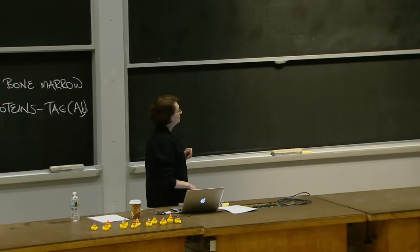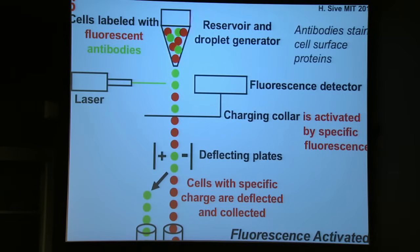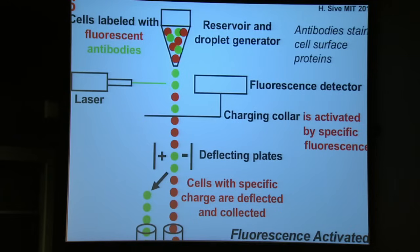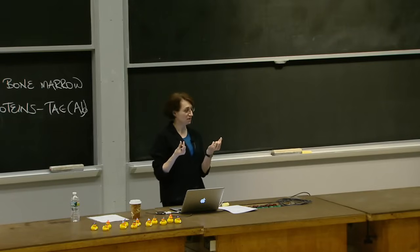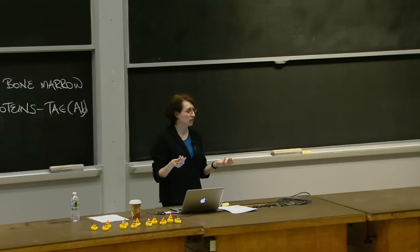Now we can go to our fluorescence activated cell sorter. You take a mix of cells labeled with fluorescent antibodies, put them into a reservoir and droplet generator. Cells drop out one at a time past a laser — you can tune the laser to whatever wavelengths you want. It excites the cells, and if a cell emits at the particular wavelength you're interested in, the detector detects that and gives a charge to that cell. As cells drop down, those of the correct color are deflected by an electric charge into different flasks. You can collect millions of cells an hour — one cell at a time — isolating cells with stem cell properties.